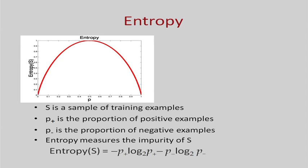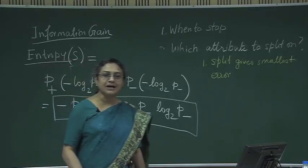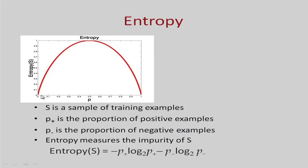Entropy is highest when p-plus equals p-minus equals one half. Looking at the entropy curve: when p equals 0, entropy is 0; when p equals 1, entropy is 0; when p equals one half, entropy is 1. You can verify: minus one half times log base 2 of one half, times 2, equals 1. The highest value of entropy is 1 when p-plus equals p-minus equals one half. The entropy is 0 if the outcome is certain, and maximum if we have no knowledge of the system.